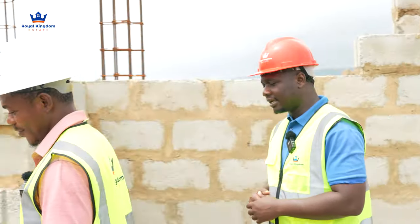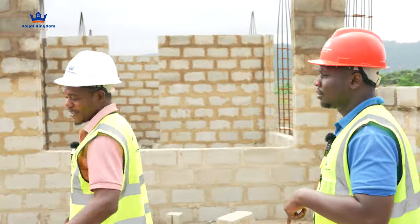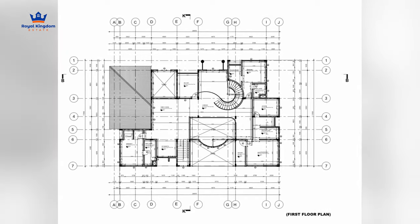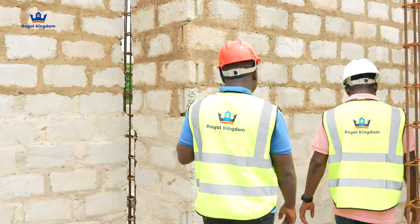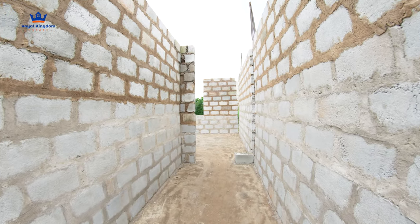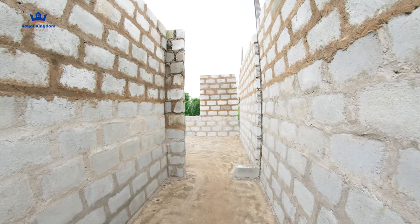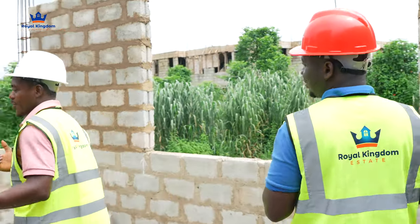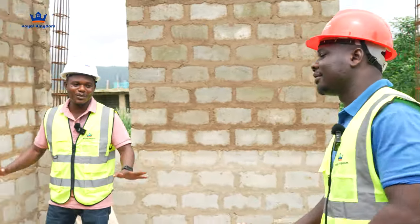So the master bedroom is on the ground floor, with another bedroom upstairs. Some clients, depending on age, don't want to climb stairs. In the meantime, the client may be using the top floor, but as time goes on and his strength decreases, he can come down to the ground floor master bedroom. That's very thoughtful planning.